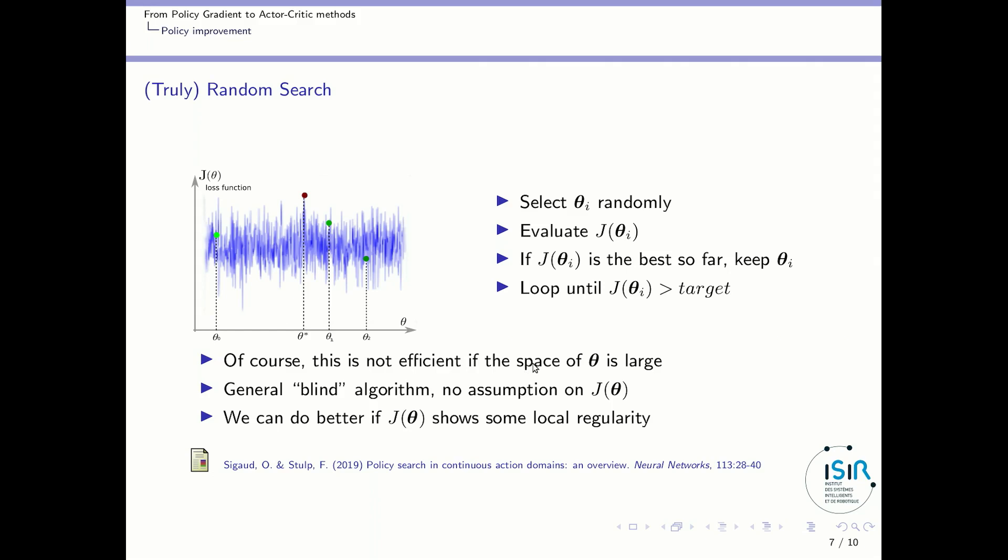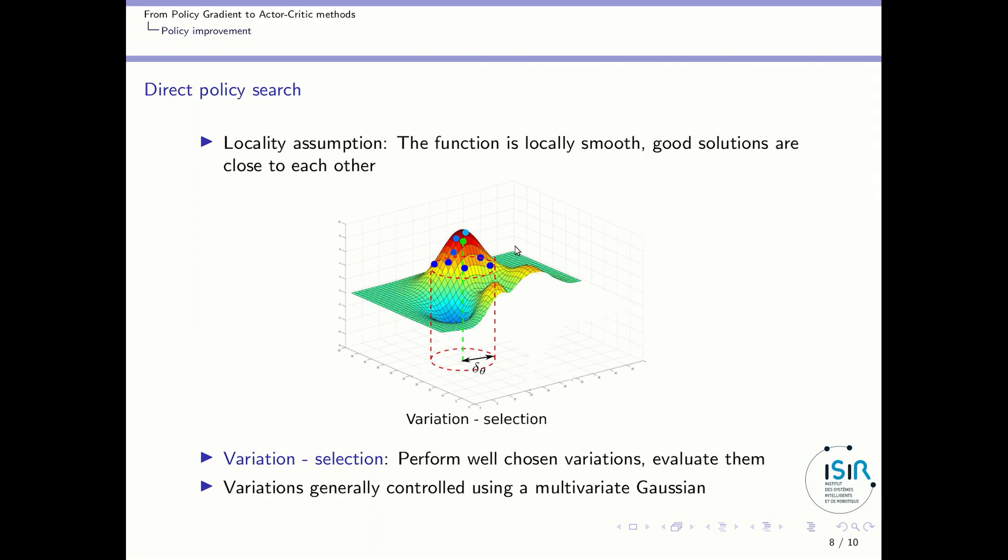Of course this is not at all an efficient algorithm if the space of policy parameter is large. You may search randomly for a long while before finding the peak for instance. But that's a very general blind algorithm which needs no assumption at all on the performance function. Of course we can do better if the performance function in the parameters θ shows some local regularity.